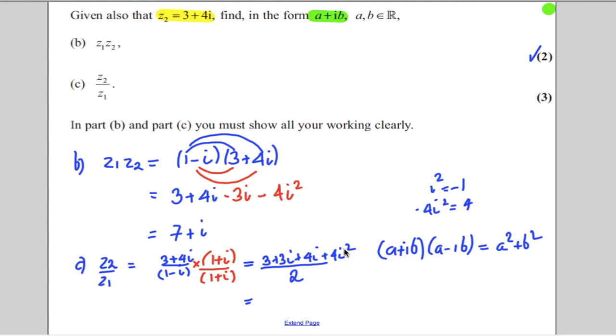Remember i squared is negative 1, so 4 times negative 1 is negative 4, so this would be 3 subtract 4, which is negative 1 plus 7i over 2.